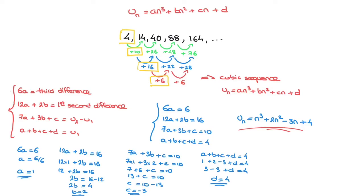The good news is that the method we've just learned, along with these four equations, will work for any cubic sequence. As soon as we're dealing with a sequence of numbers in which the third difference is a non-zero constant number — meaning it never changes — we're dealing with a cubic sequence, which means it must have the formula an cubed plus bn squared plus cn plus d, and we can use these four equations.